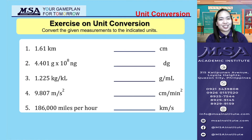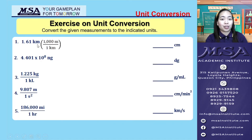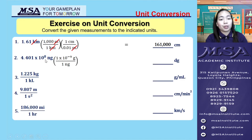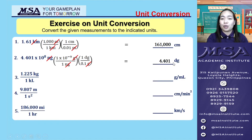Now let's start checking the exercise. Number 1 is a conversion from one non-base unit to another. We convert 1.61 kilometers into meters first, then convert the meters into centimeters using the appropriate conversion factor, giving an answer of 161,000 centimeters. For number 2, the same rules apply: convert nanograms into grams first, then convert grams into decigrams, giving an answer of 4.401 decigrams.